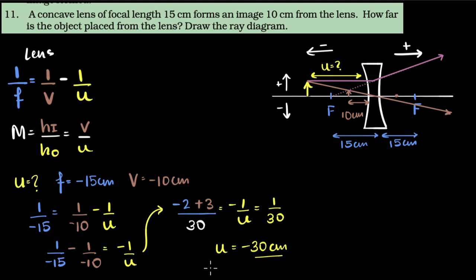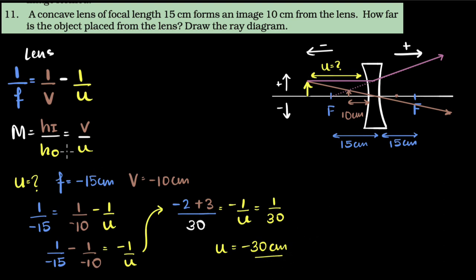Feel free to pause and check the simplification. U equals minus 30 centimeters — the minus sign tells us the object is on the left side, which is exactly what the ray diagram shows. It is 30 centimeters from the lens, and that distance looks consistent with the ray diagram — it is farther away from the focus.